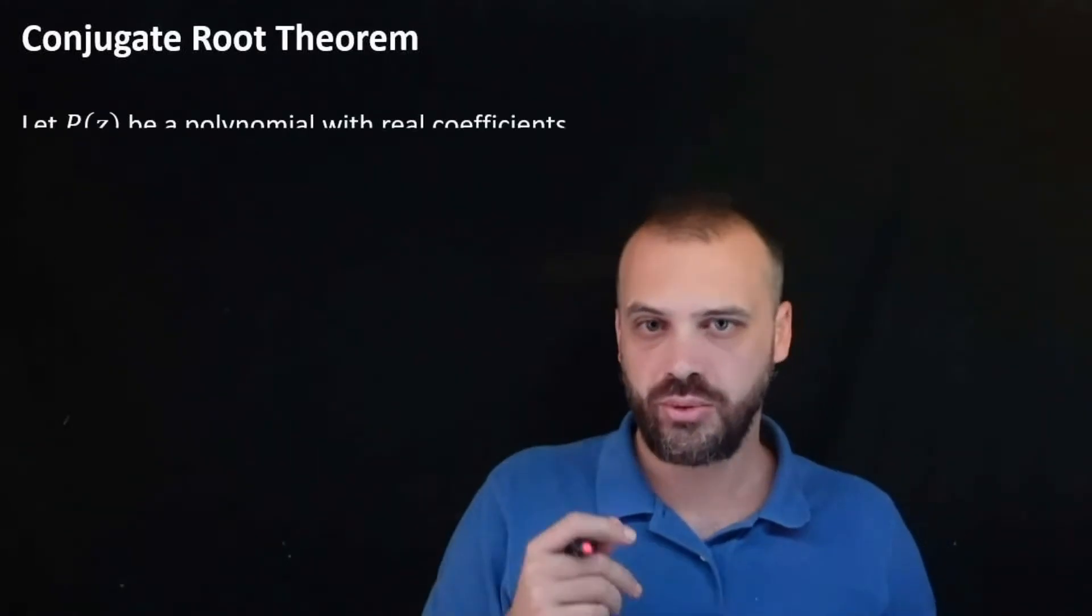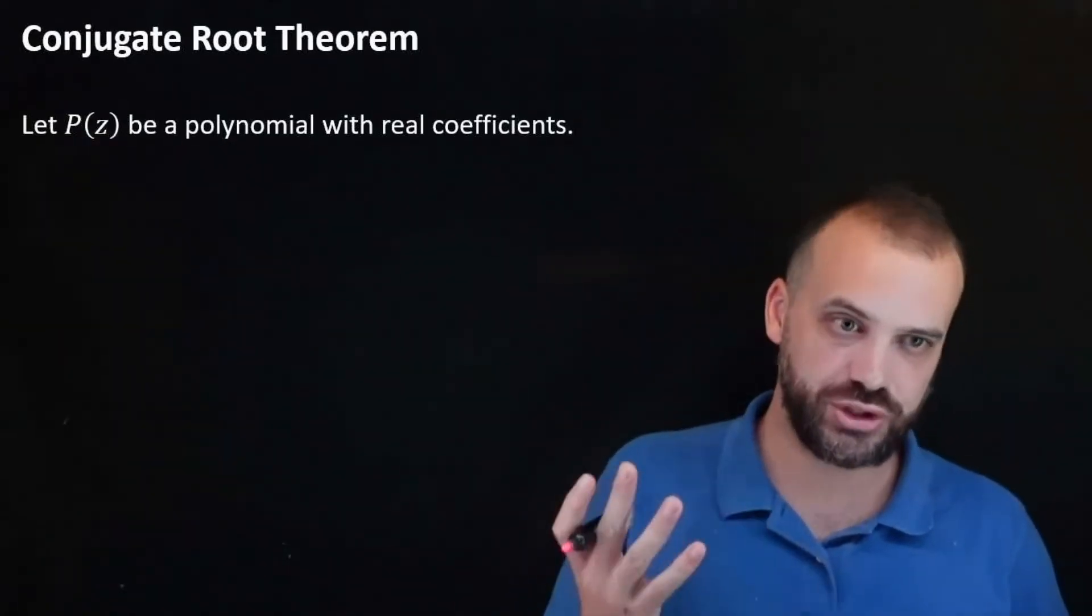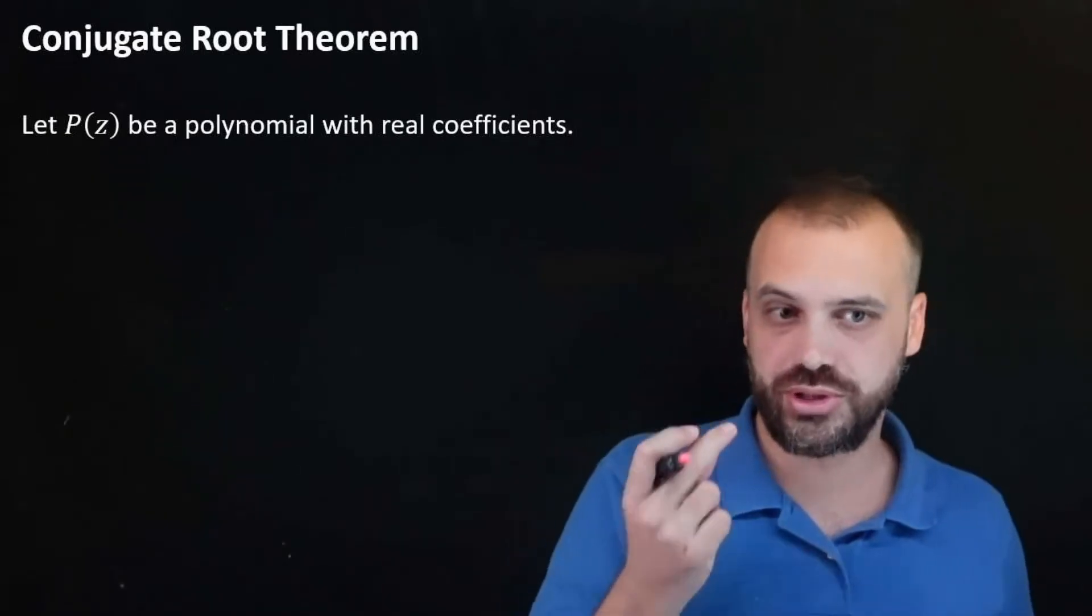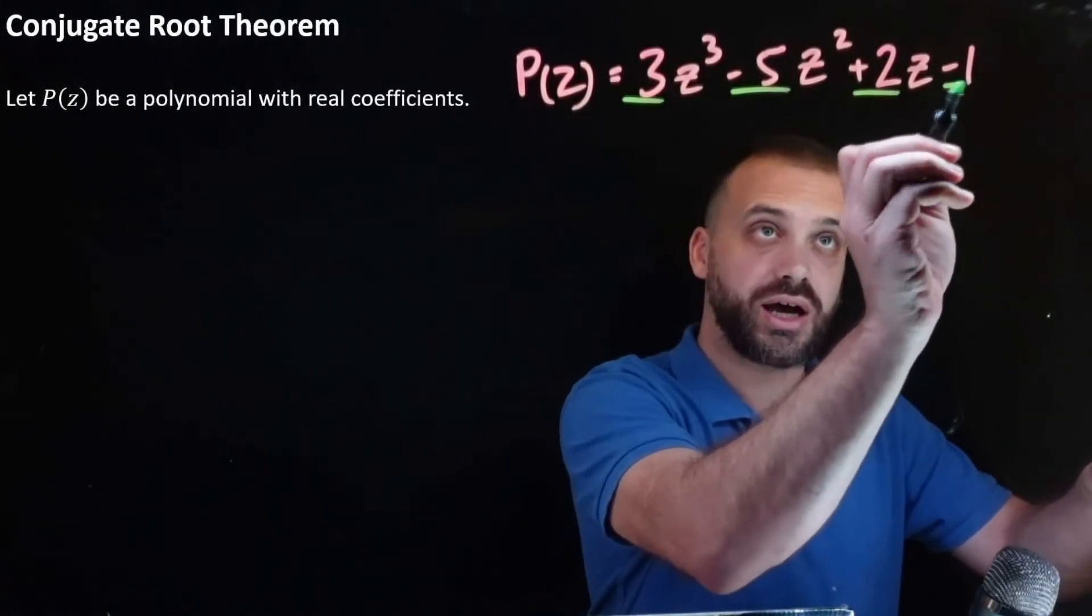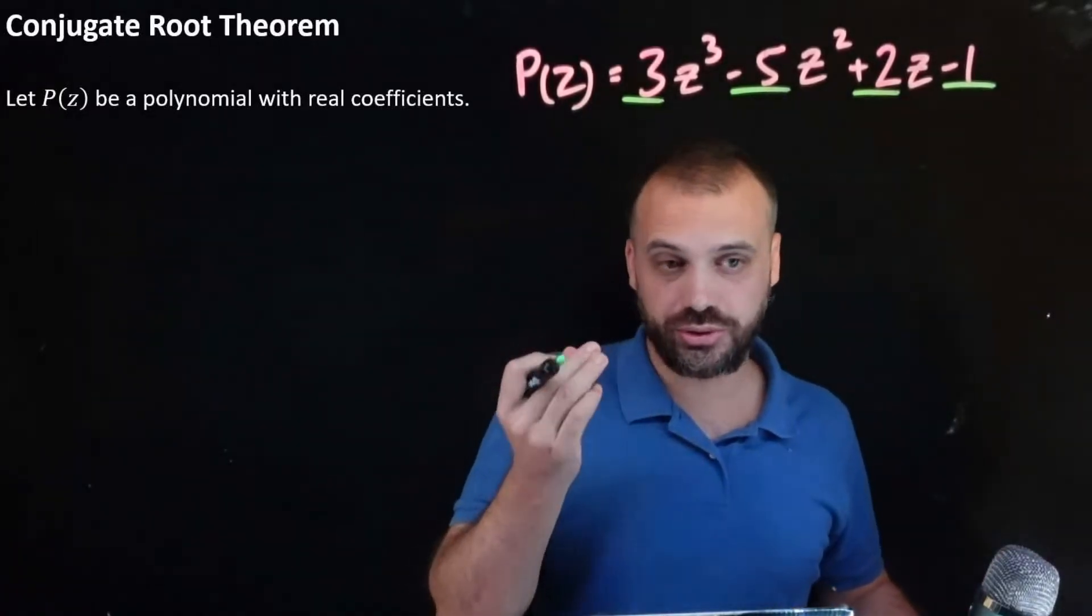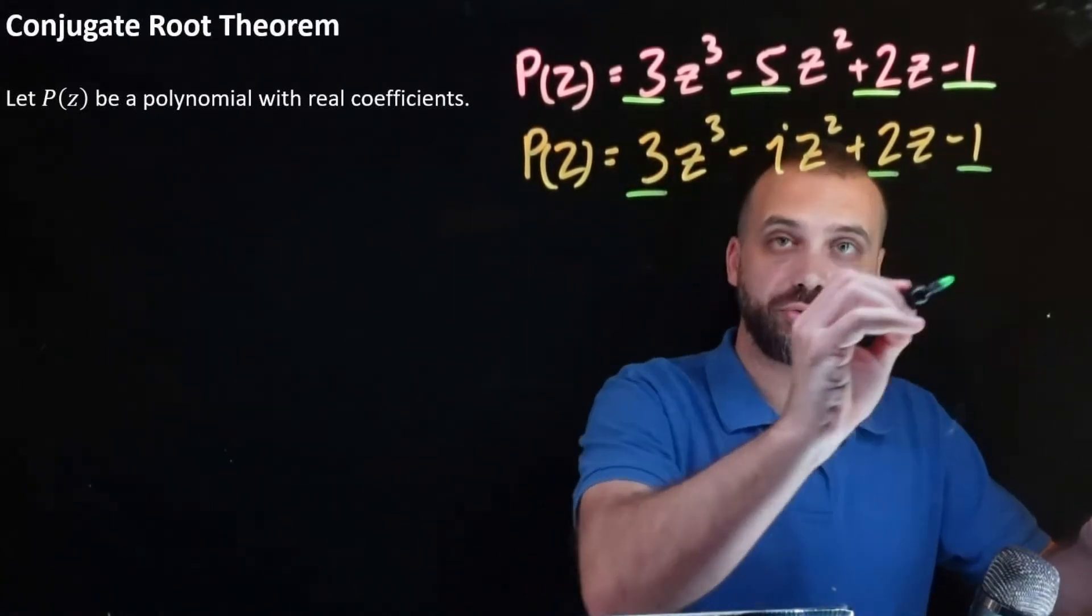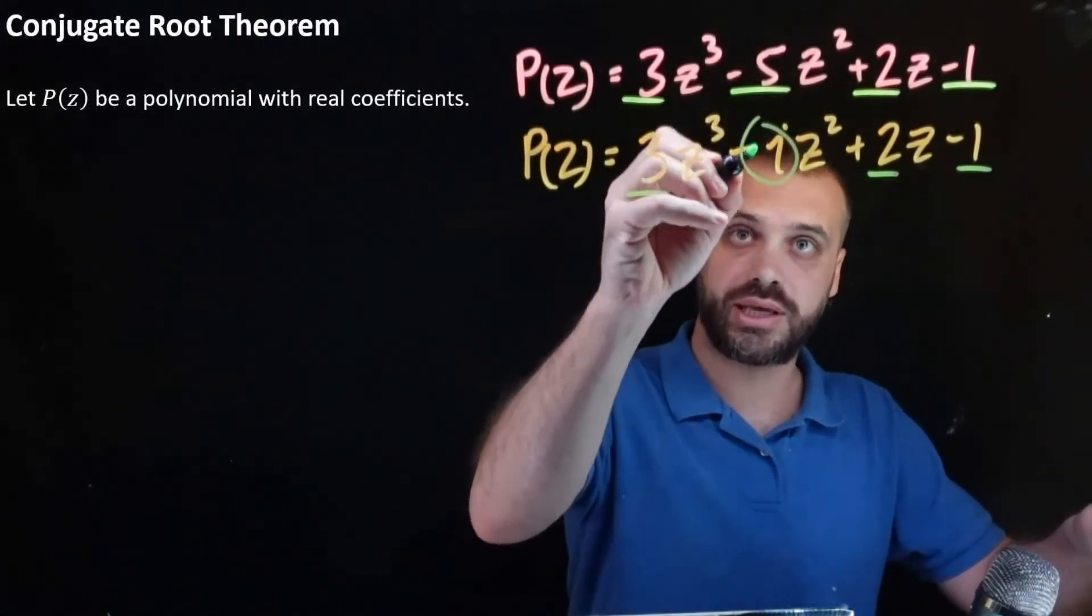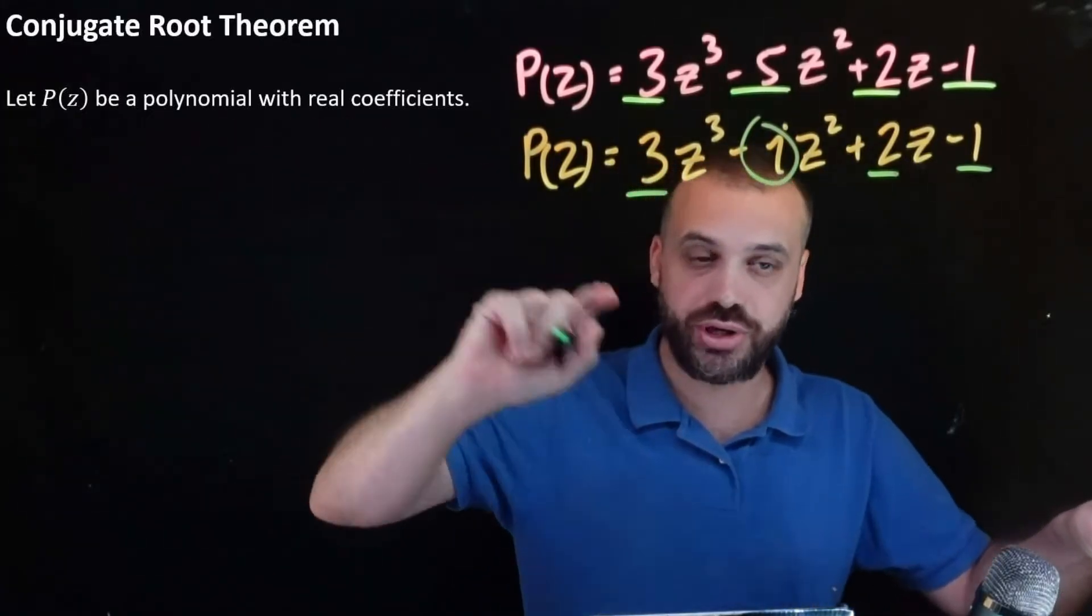So what's the conjugate root theorem? Well, it applies to polynomials with real coefficients. So it applies to polynomials that look like this, and it does because all of the coefficients are real. It does not apply to polynomials that look like this, because while most of the coefficients are real, one of them is imaginary, and the conjugate root theorem only works with real coefficients.